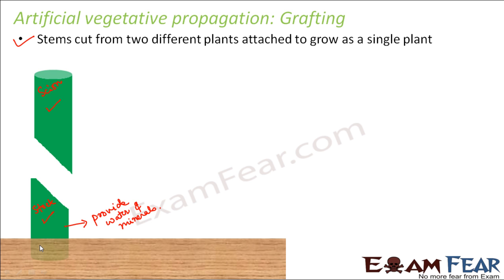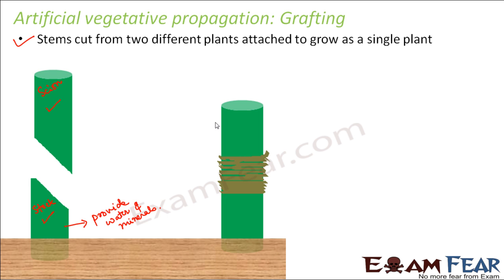So how do we make this? The scion and the stalk are cut in a specific way — if the scion is cut in this way and the stalk is cut in this way, when you put them together no gap is left between them. It is very important to make sure that the scion and stalk fit each other exactly, leaving no gap. That is why a slant cut is preferred.